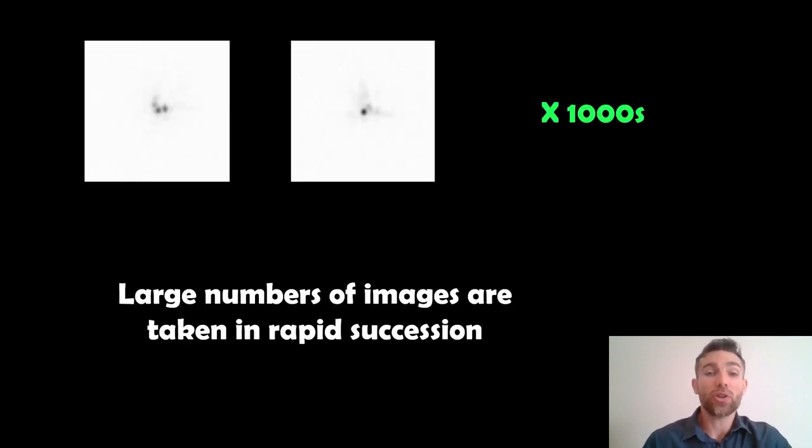So what do you actually do then for speckle imaging? Well you need to take an enormous amount of images. But if your individual exposure, your individual image is a fraction of a second, you can quite quickly take lots of them. So you take thousands quite typically. So thousands and thousands of images in rapid succession, and it captures the atmospheric turbulence like you have here.